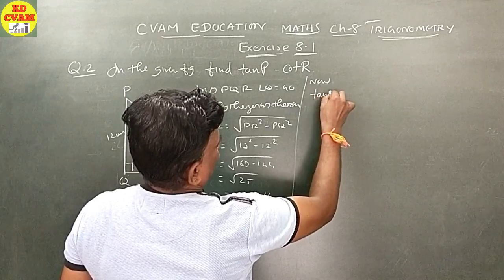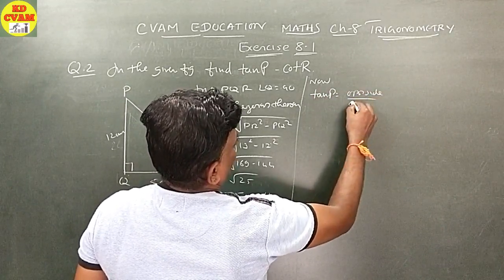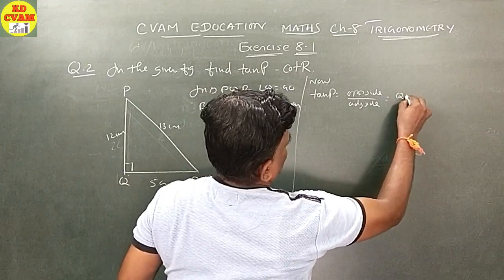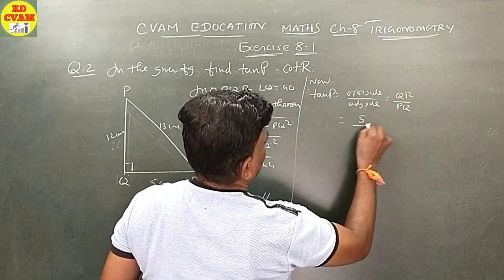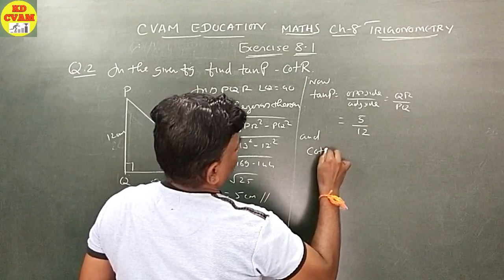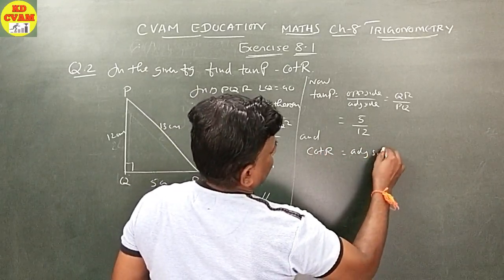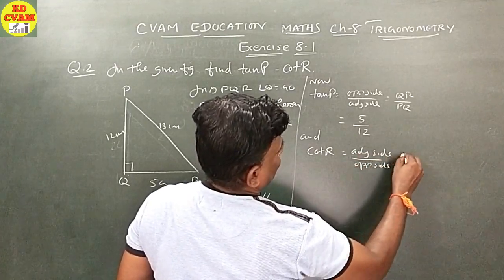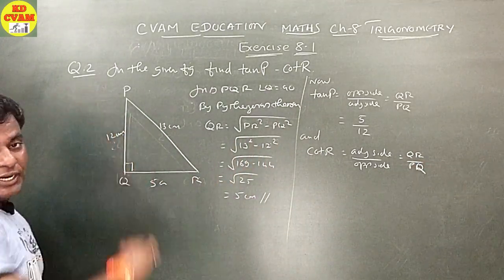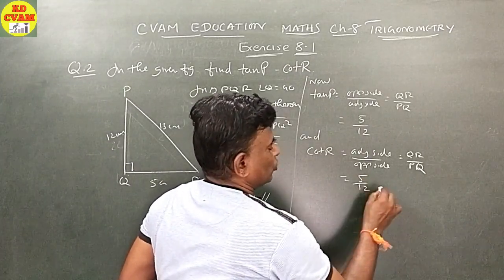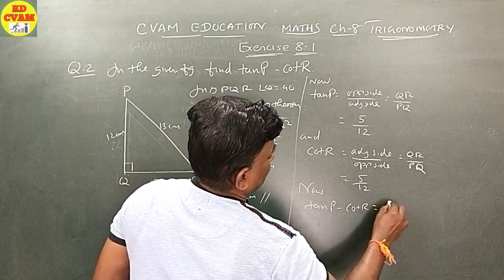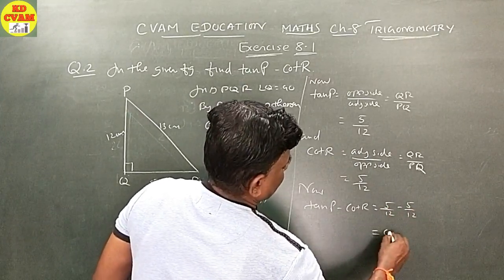Now, tan P is equal to opposite side upon adjacent side. Tan P equals QR upon PQ. Now tan P minus cot R equals 5 upon 12 minus 5 upon 12, which equals zero.